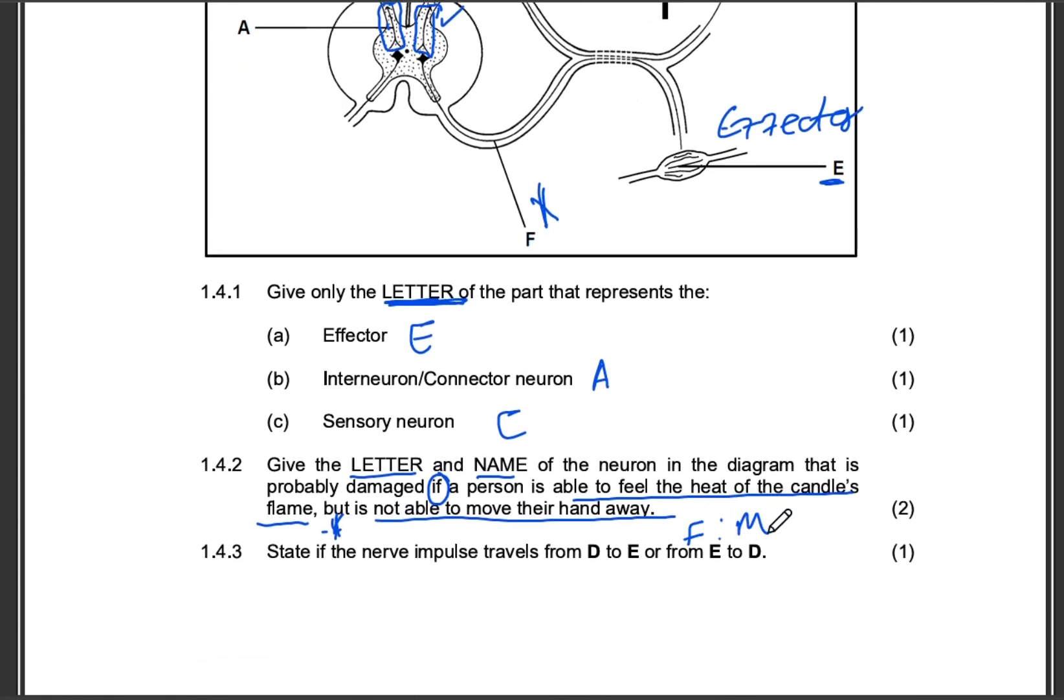So the letter of the neuron that is damaged is F, and the name of that neuron is the motor neuron. So this kind of question is very popular, guys. So please find a way of understanding it. It's very easy to understand.